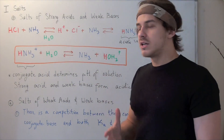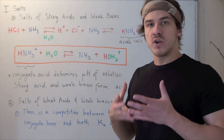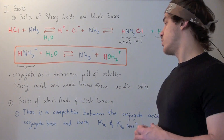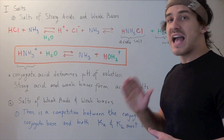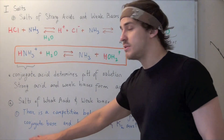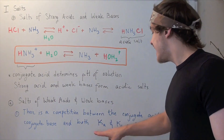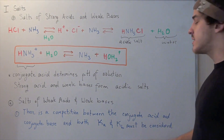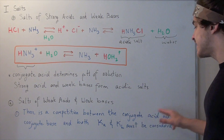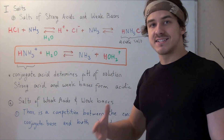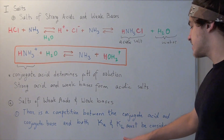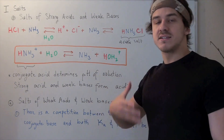Finally, let's look at what types of salts are created when weak bases and weak acids react. There is a competition between the conjugate acid and the conjugate base, and both Ka and Kb must be considered. If Ka wins — if the conjugate acid wins — we get an acidic salt. If Kb wins, we get a basic salt.